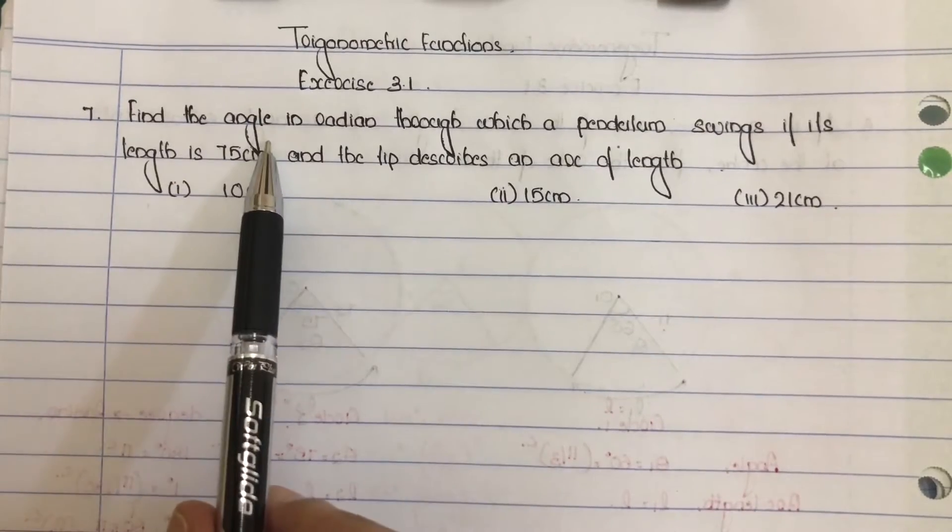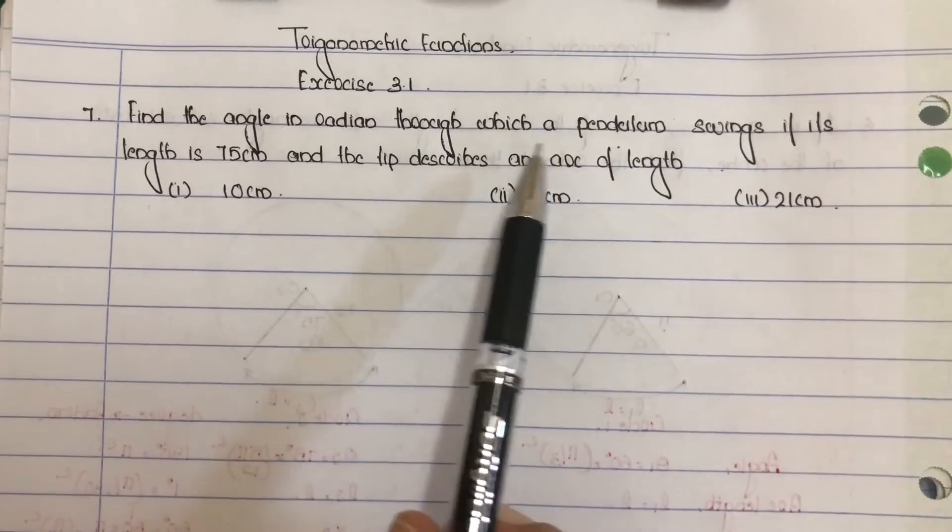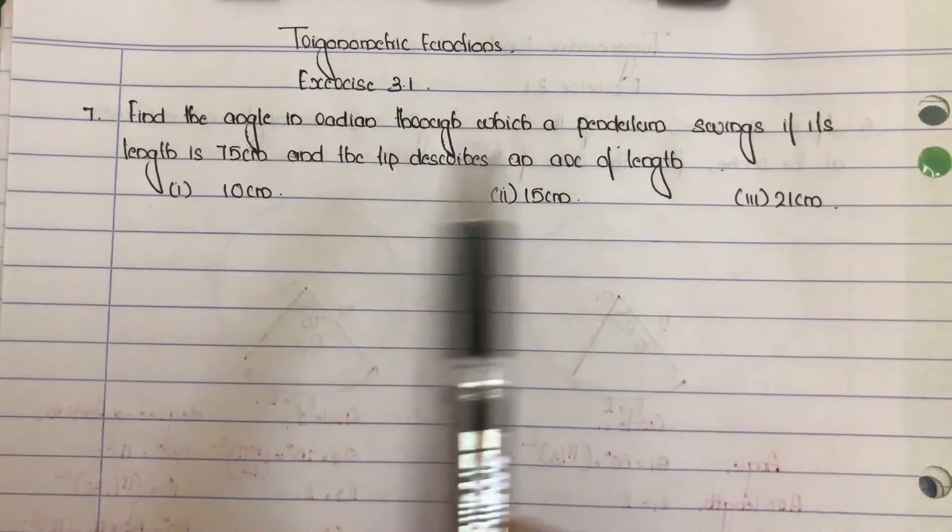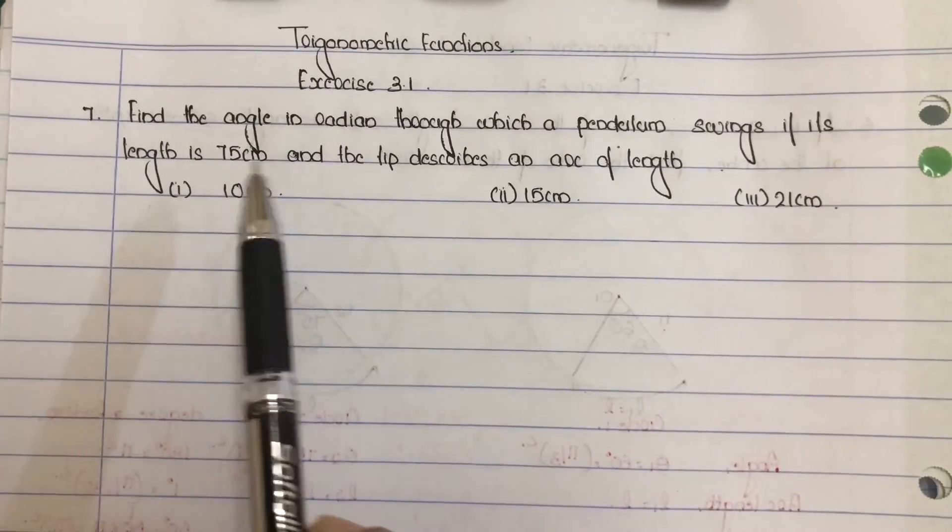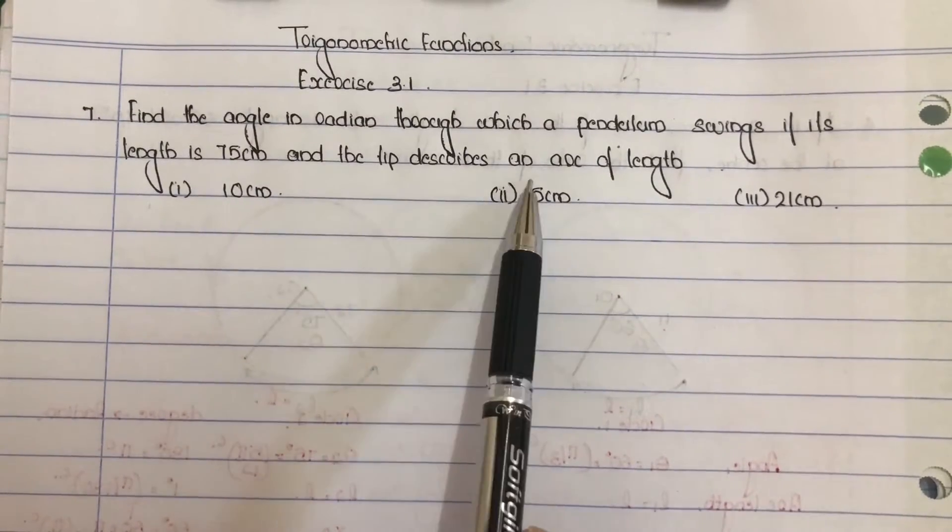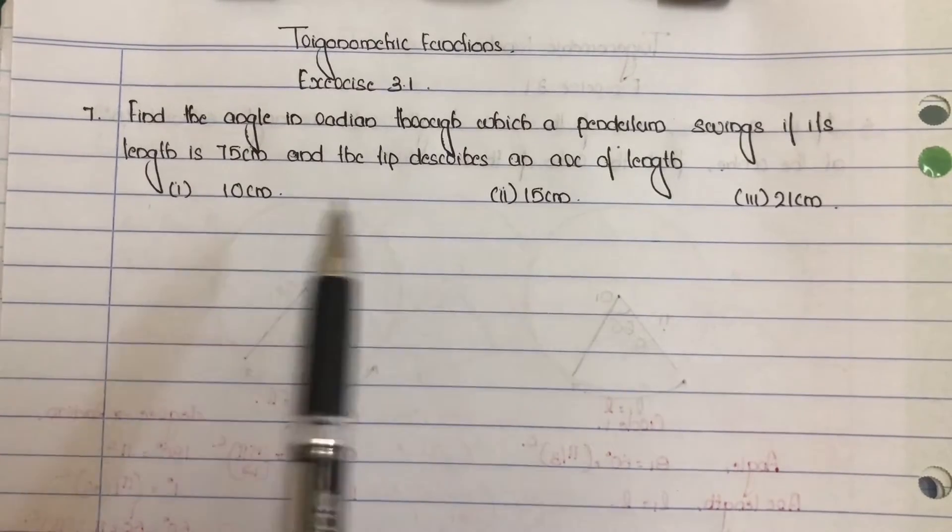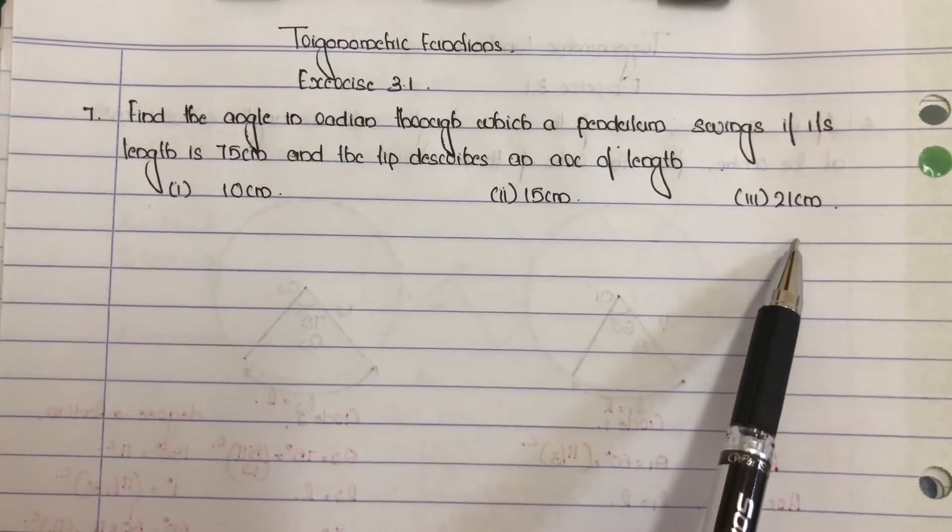Question number 7. Find the angle in radian through which a pendulum swings if its length is 75 centimeter and the tip describes an arc of length 10 centimeter, 15 centimeter, 21 centimeter.